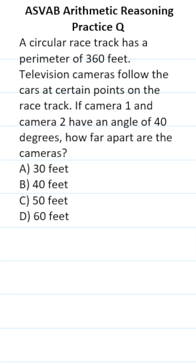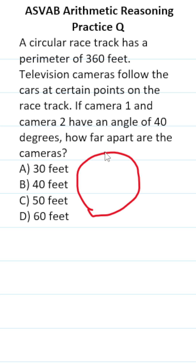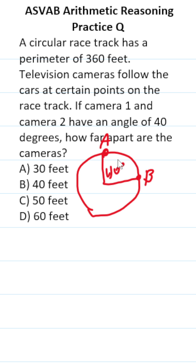This ASVAB PyCAT practice test question tests your understanding of circles. Specifically, we have two cameras, A and B, on a racetrack here. They have a central angle of 40 degrees, and given that, we want to figure out how far apart they are, which is the same thing as figuring out this arc length right here.